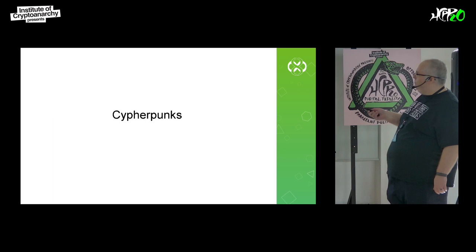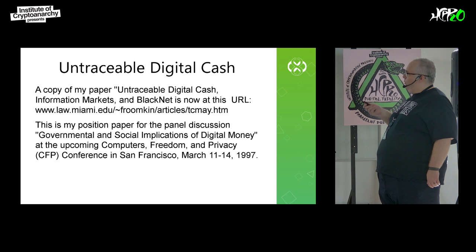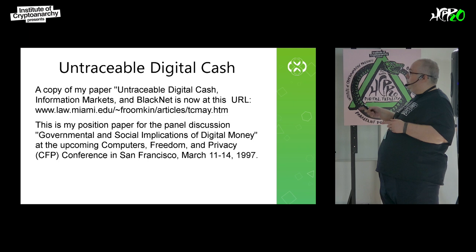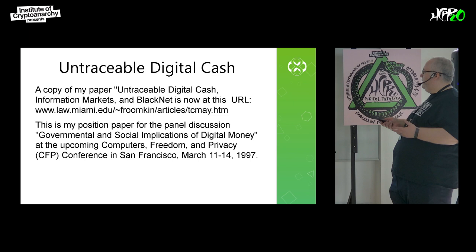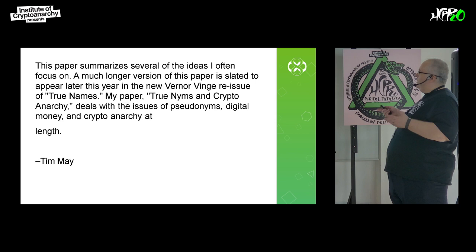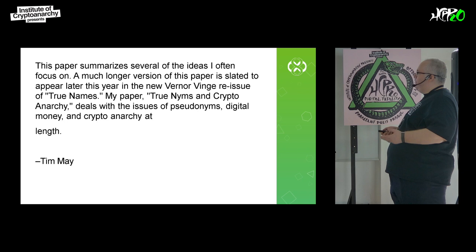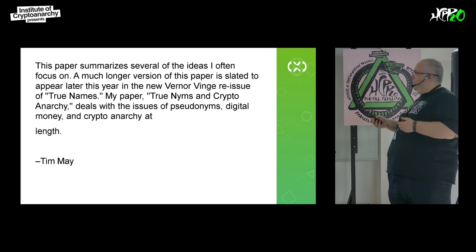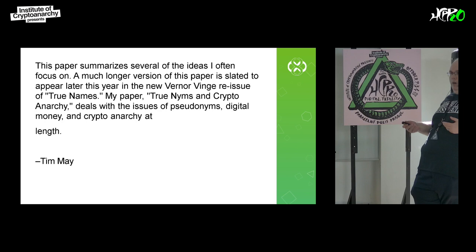Cypherpunks. In 1997, there was a post: 'A copy of my paper, Untraceable Digital Cash, Information Markets and BlackNet, is now on this URL — which is actually still live. This is my position paper for a panel discussion on governmental and social implications of digital money at the upcoming Computers, Freedom and Privacy Conference.' The paper summarizes ideas focused on pseudonyms, digital money, and crypto anarchy. This was Tim May — Timothy C. May — who died a couple of years ago. He was a big influence on crypto anarchy and on cryptocurrency as it is today, and this is 1997, years before Bitcoin.